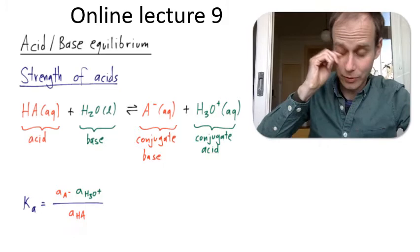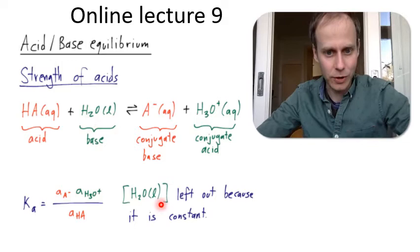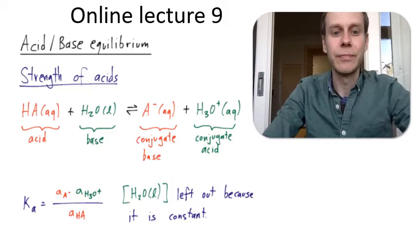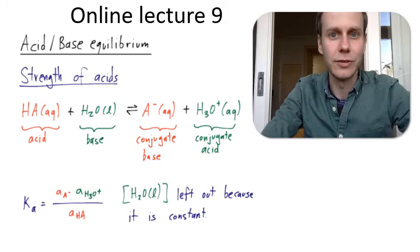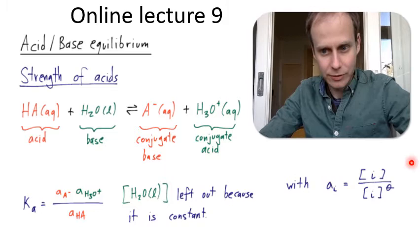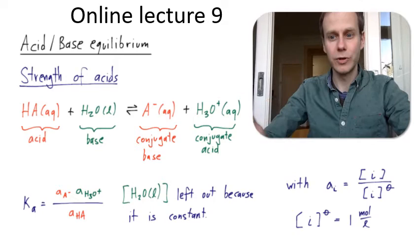I left out the activity of water because water is the solvent — there is such an abundance of water that it can be left out of the acid dissociation constant Ka. The activity of each species is defined as the concentration of that species divided by the standard concentration, where the standard concentration is one mole per liter. So the units of these concentrations are moles per liter.